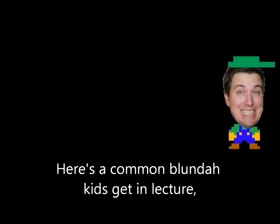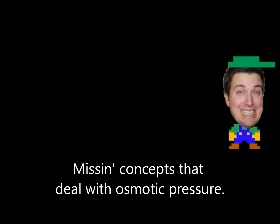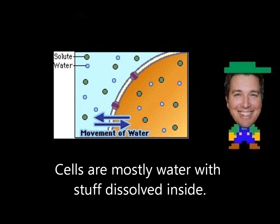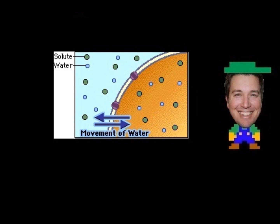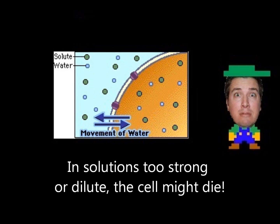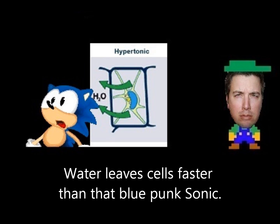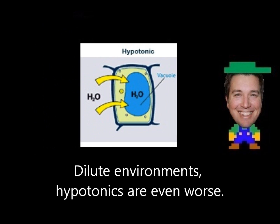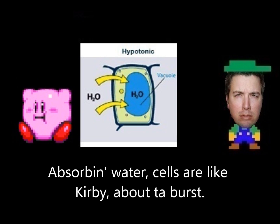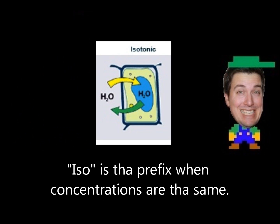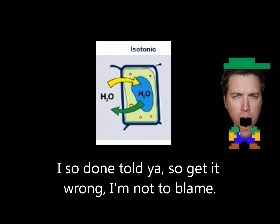Here's a common blunder kids get in lecture — missing concepts that deal with osmotic pressure. Cells are mostly water with stuff dissolved inside, and solutions too strong or dilute can cause the cell to die. Concentrated solutions we call hypertonic — water leaves cells faster than Sonic. Dilute environments, hypotonics, are even worse — absorbing water, cells are like Kirby about to burst. Iso- is the prefix when concentrations are the same.